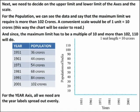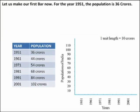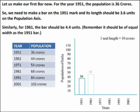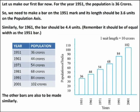For the year axis, all we need are the year labels spread out evenly. Let us make our first bar. For the year 1951, the population is 36 crores, so we make a bar on the 1951 mark and its length should be 3.6 units on the population axis. Similarly, for 1961 the bar should be 4.4 units, and it should be of equal width as the 1951 bar. The other bars are made similarly.